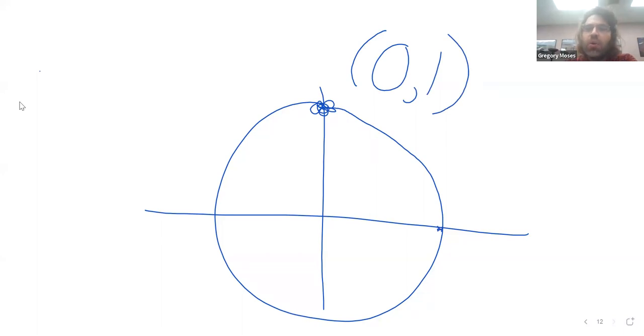Then pi over four is a fourth of that. Sorry, pi over two is a fourth of that. So we travel a fourth of the distance and we wind up there.